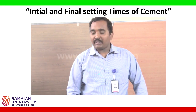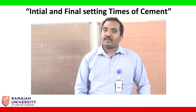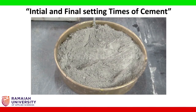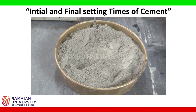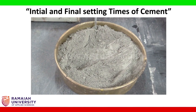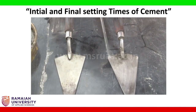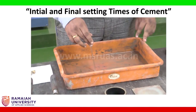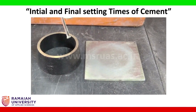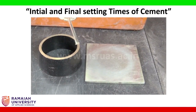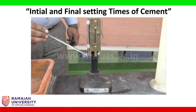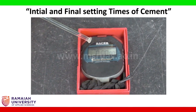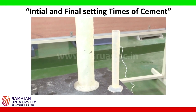Today we will do this experiment. The apparatus required: one is a weighing balance of 1-gram accuracy, a cement sample — here we are using ordinary Portland cement 53 grade — mixing gauges, a tray for mixing, a mold with base plate, Vicat apparatus, stopwatch, measuring jar, and mixing water.